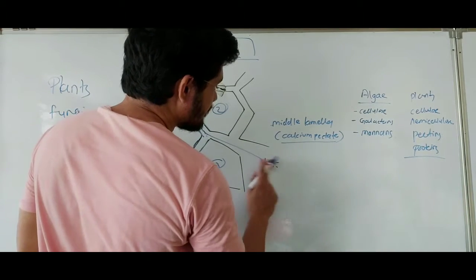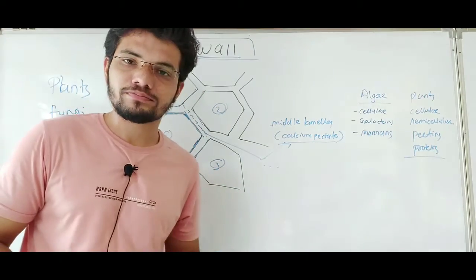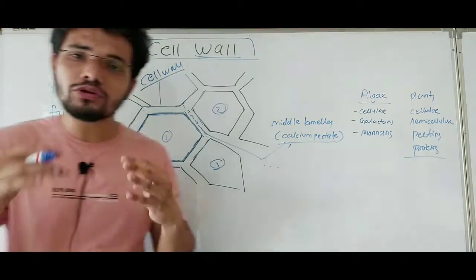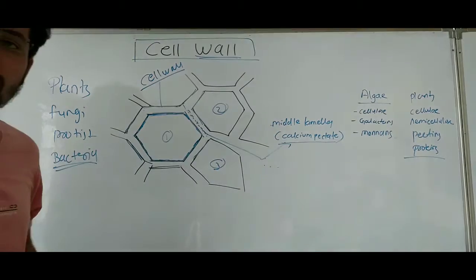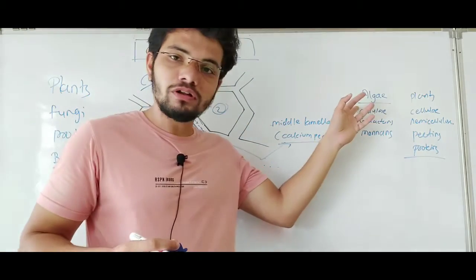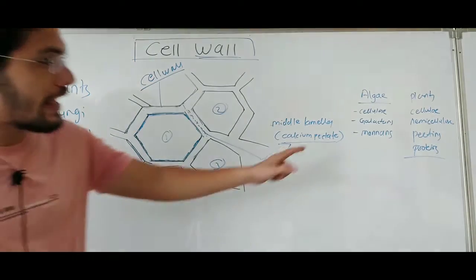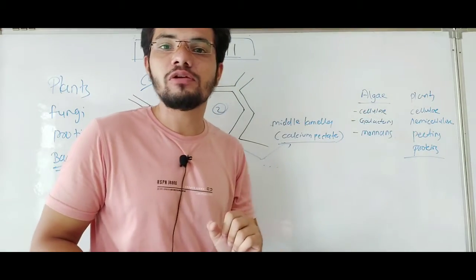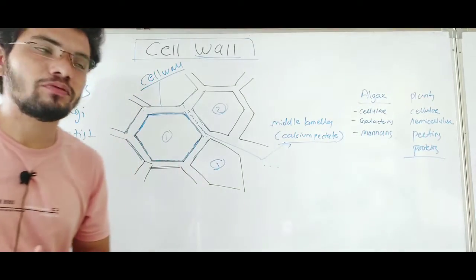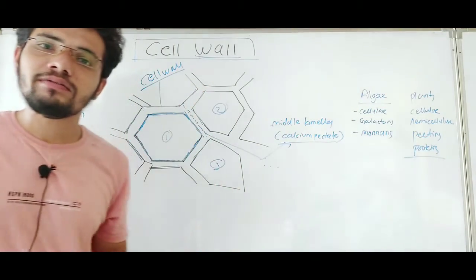The middle lamella is made up of calcium pectate. Plant cell wall is mainly made up of cellulose, hemicellulose, pectins, and some proteins. Algae cell walls are quite different from plant cell walls, having components like galactans and mannans, though they also contain cellulose.